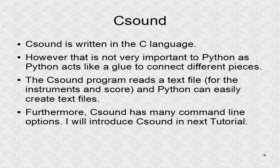CSound is written in the C language. However, Python is often used as a glue to piece different components together. One of those pieces involves writing text as key files in terms of the instruments, tables, and scores. We will later see what those terms mean for CSound. Once the file is written, CSound is usually run from the command prompt and has a lot of flags. Python has many ways of automating processing in the command prompt.